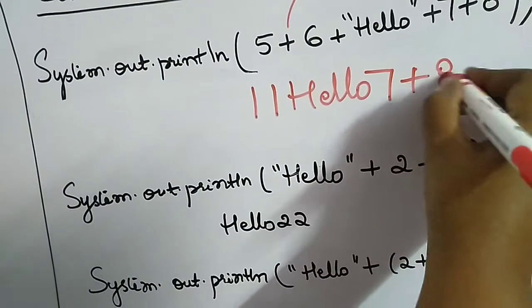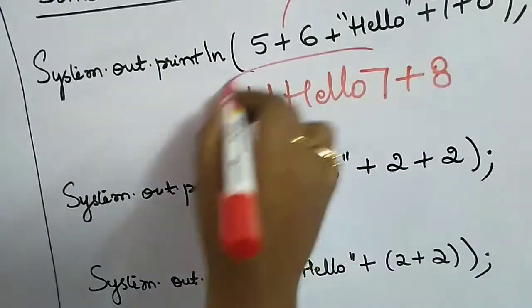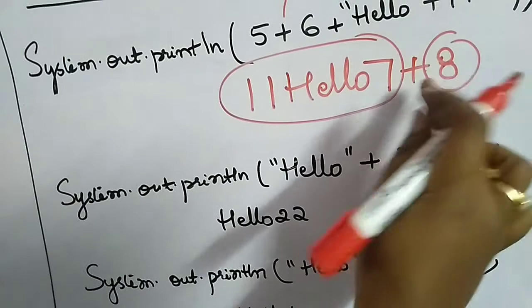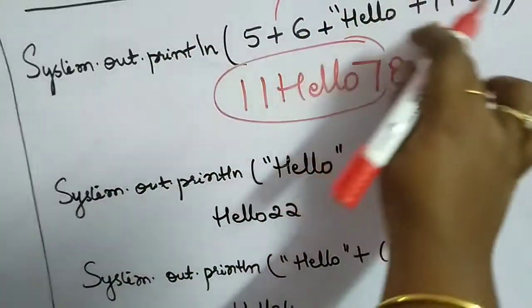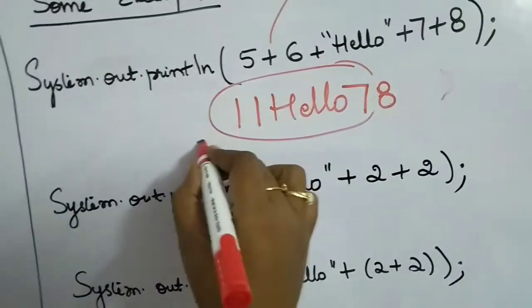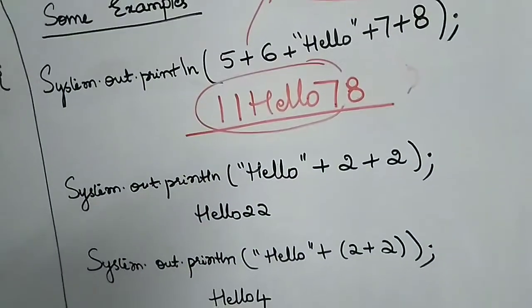Then plus eight. It will imagine this thing to be one string and this is another string, combining them as 78. So the output of this System.out.println will be 11Hello78.